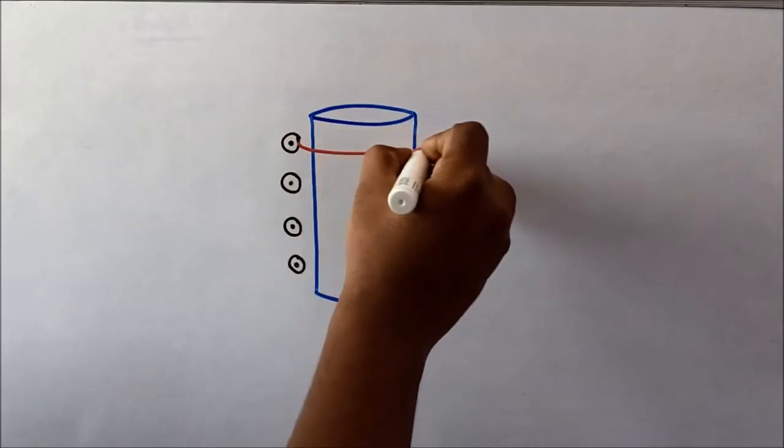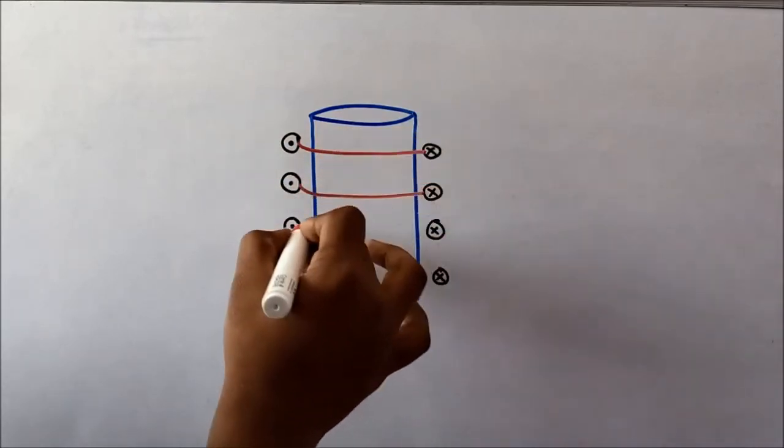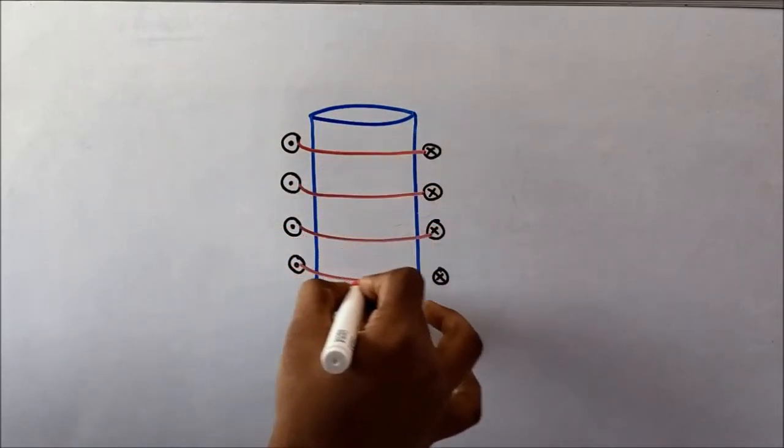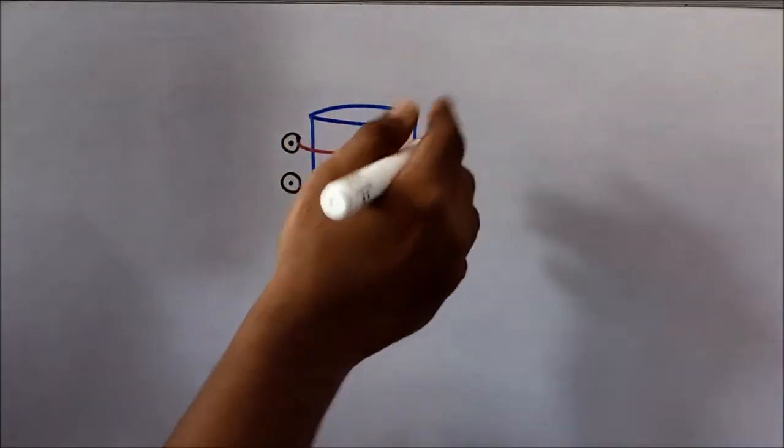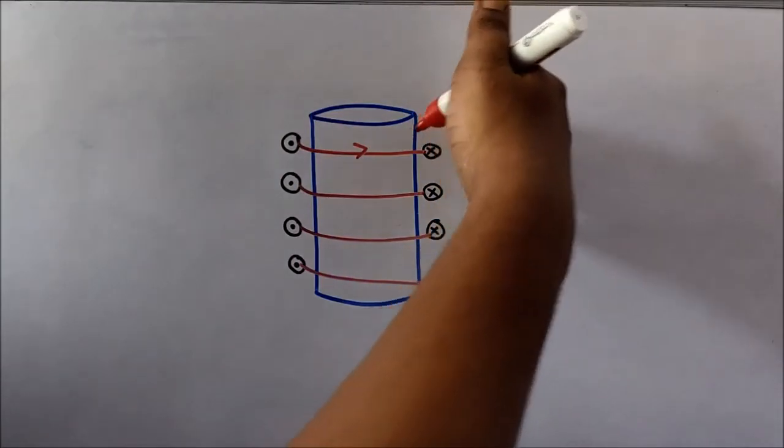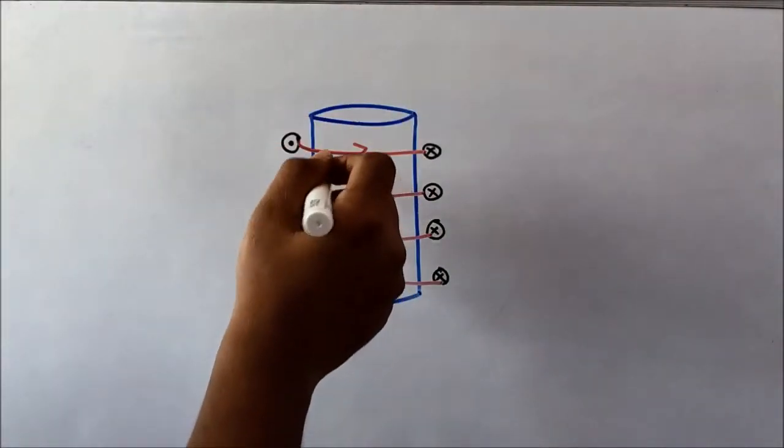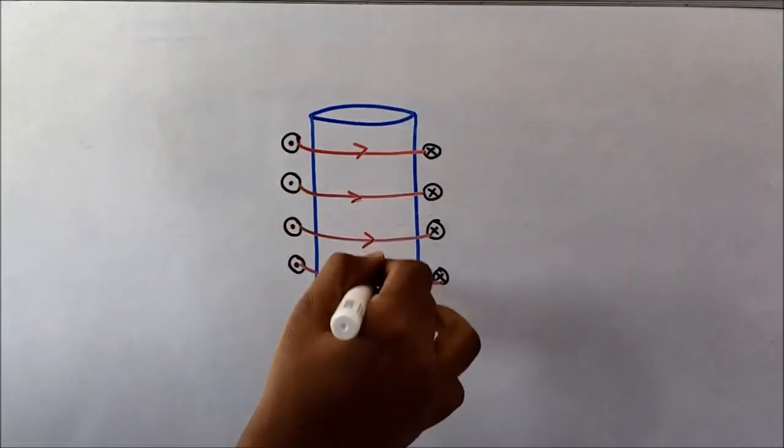In a way it looks like this. These are the conductors and the current is coming out of the plane from this side, so it moves like this and goes into the plane.